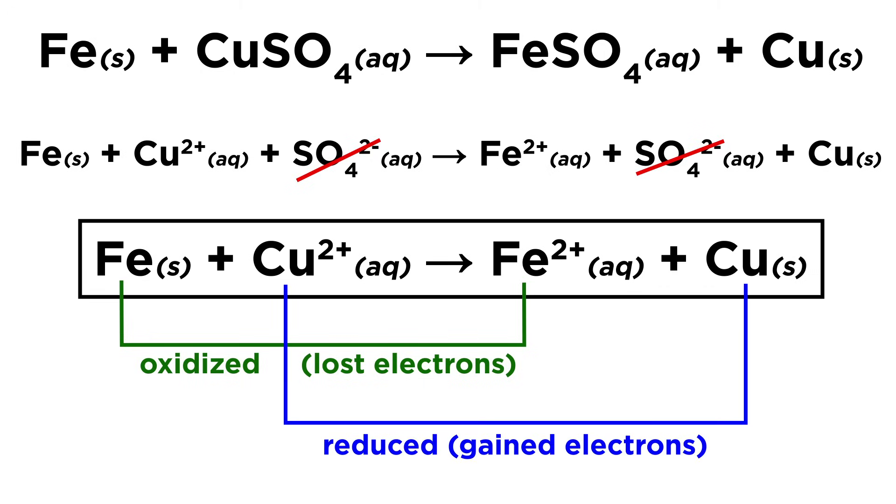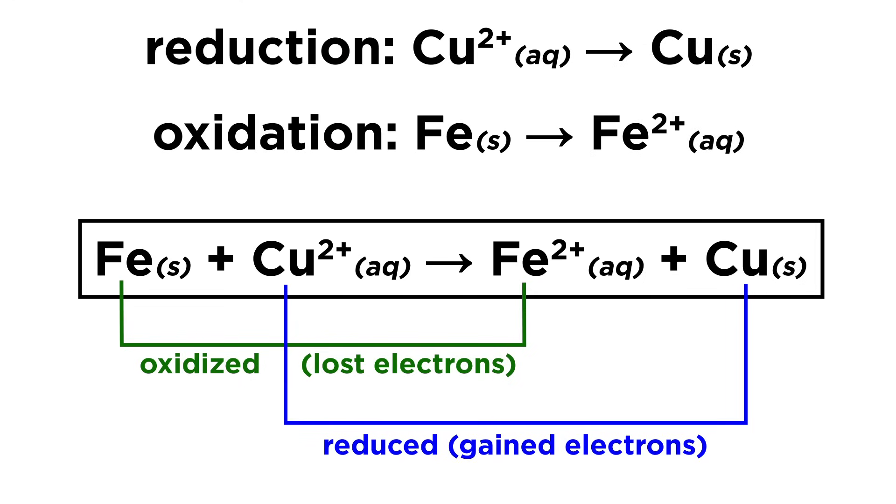It may seem confusing to associate a reduction with a gain of electrons, so instead associate reduction with a reducing of charge. Copper 2+ had its charge reduced to zero when it gained two electrons. More electrons means a more negative or lower charge.